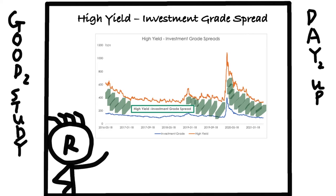If a trader wants to launch the spread, he or she will buy junk bond and sell IG bond with the same maturity. The trader will profit if the spread tightens — meaning either the high yield spread goes down quicker than the IG spread, or the high yield spread goes up slower than the IG spread. Note: bond yield is negatively related to bond value.